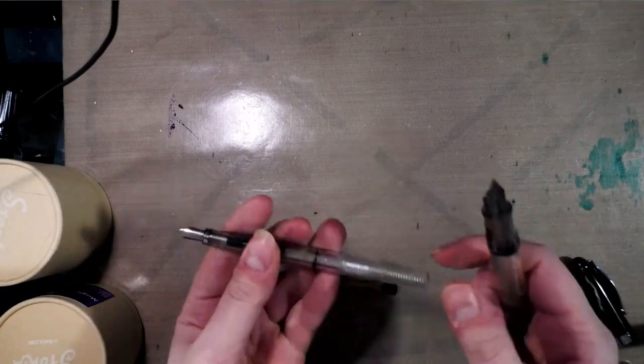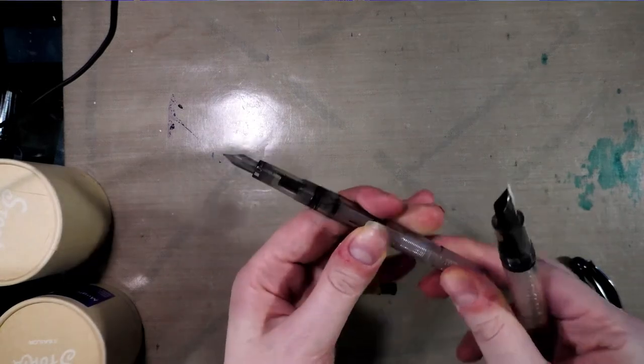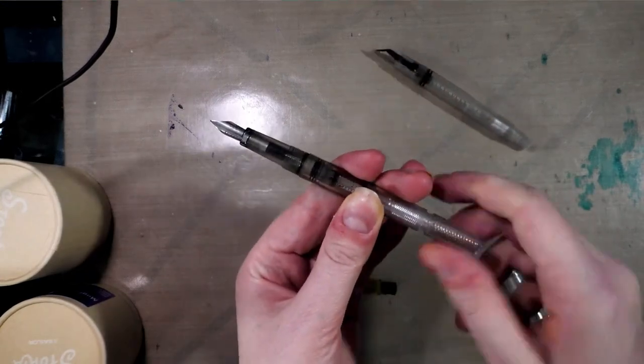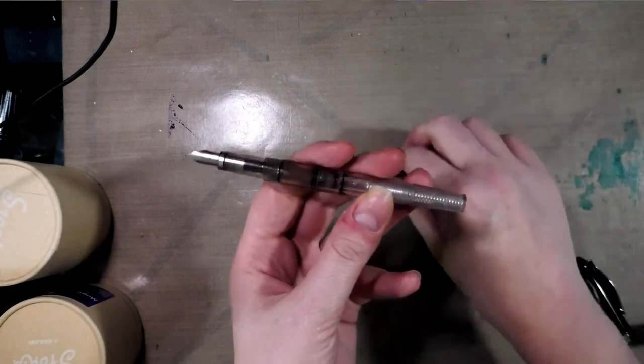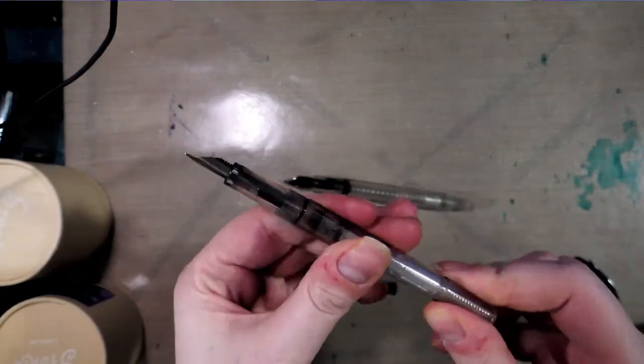So the Flex is the smallest currently. It has a piston-filled mechanism, which you twist the back to fill. And mine has had pigment ink in it, so it is still dirty even though I've cleaned it multiple times.